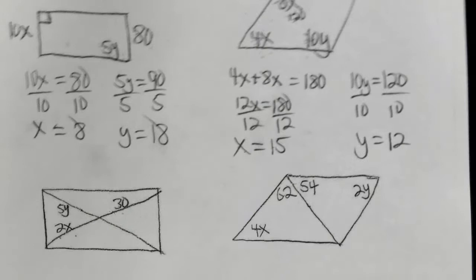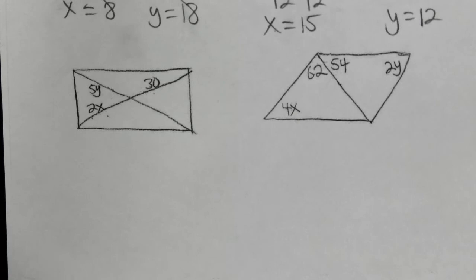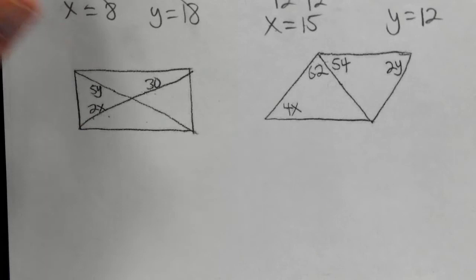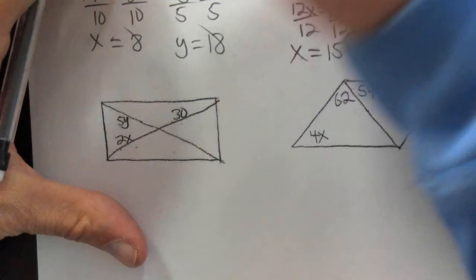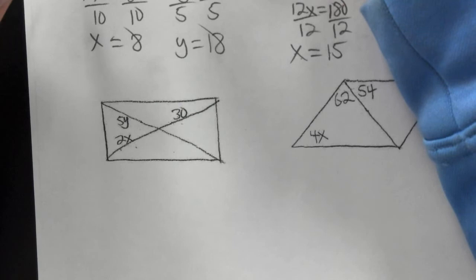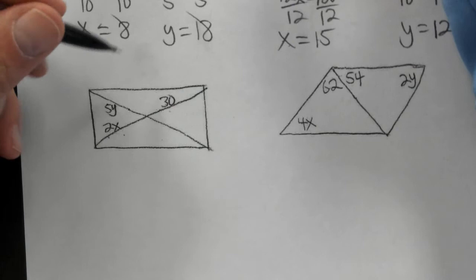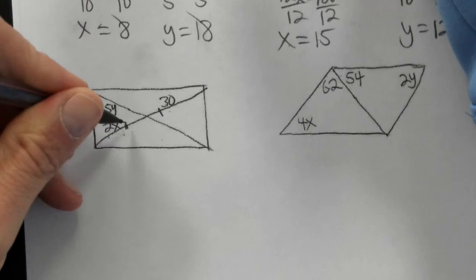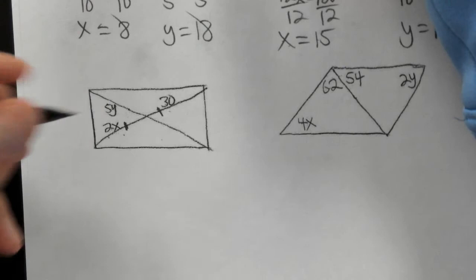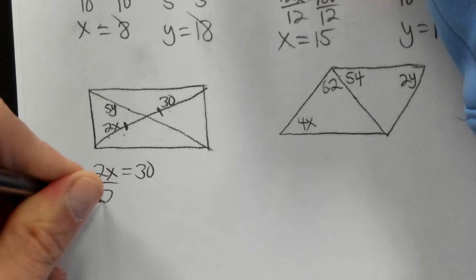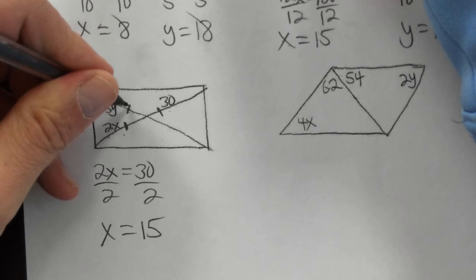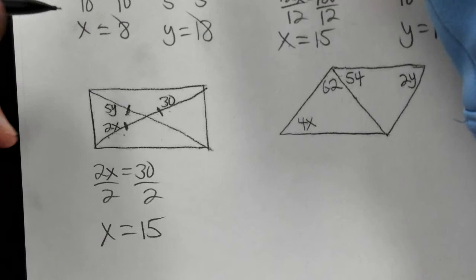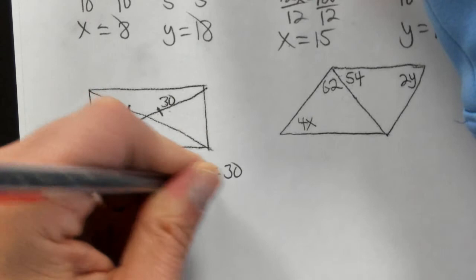In the next problem, we're given parts of the diagonals. There's only one property about diagonals: the diagonals bisect each other — they cut each other in half. So the two halves of each diagonal must be equal. That gives us 2x equals 30; dividing by 2, x equals 15. Similarly, 5y equals 30; dividing by 5, y equals 6. Those are the two answers.